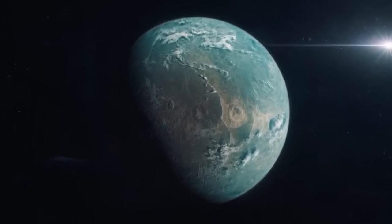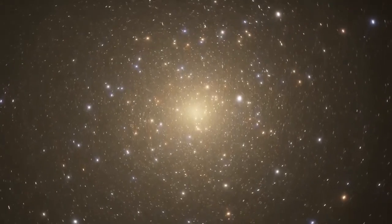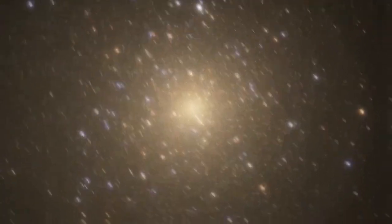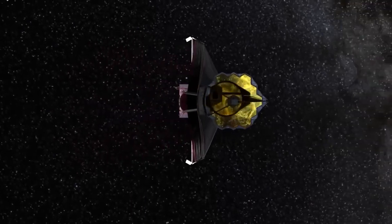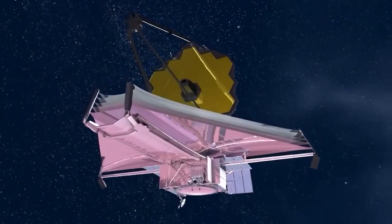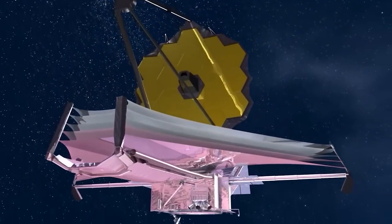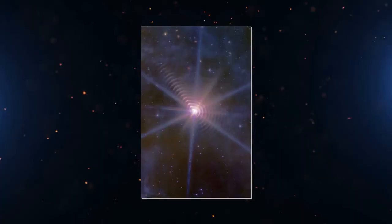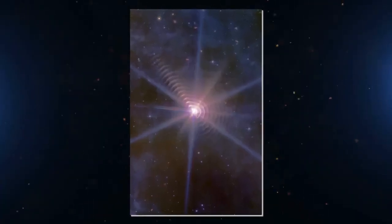But we didn't realize how close we were to having the right geometry to explain this interesting star system until the new Webb image came. There were not just one or two, but more than 17 beautifully carved shells, each one almost an exact copy of the one before it.